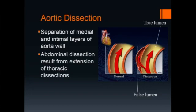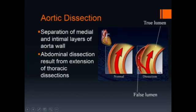Dissection of the abdominal aorta is separation of the medial and intimal layers of the aortic wall. A dissection within the abdominal aorta results from extension of a thoracic dissection, so nearly all abdominal aortic dissections originate in the thorax. A dissection is shown where blood passes through a hole within the intima and into the aortic wall itself, separating the intima from the medial and serosal layers. This pocket, where the blood has passed into the aortic wall, is known as the false lumen.